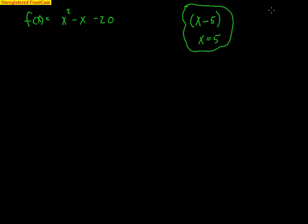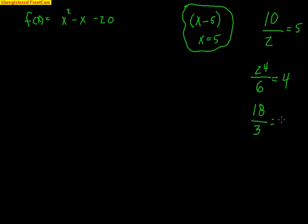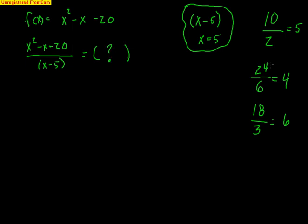Let's do a quick side lesson. If I told you the number is 10 and 2 is one of the factors, you'd find the other by dividing 10 by 2 to get 5 — so 2 times 5 makes 10. Same idea: if one of the factors of 24 is 6, you'd divide 24 by 6 and get the other factor of 4. Or if one factor of 18 is 3, divide by 3 to get the other factor of 6. So to find the other factor of x squared minus x minus 20, I'm going to divide it by the known factor x minus 5, just like dividing numbers.